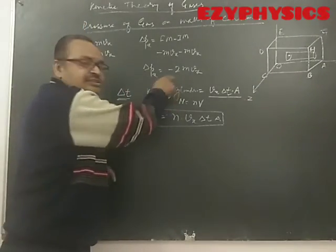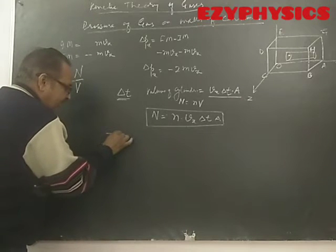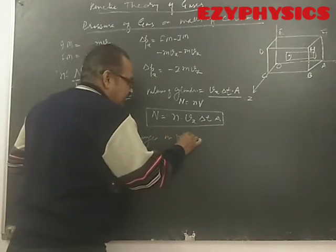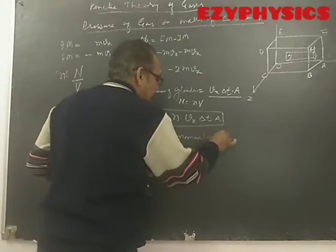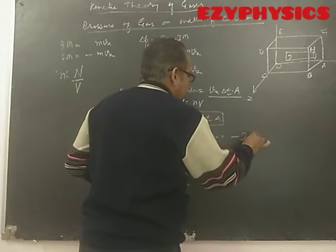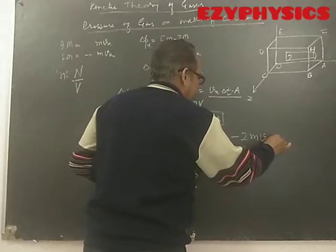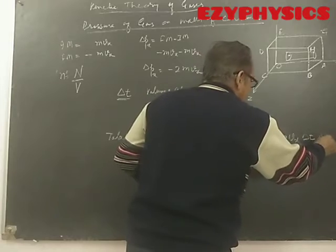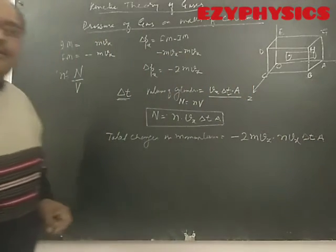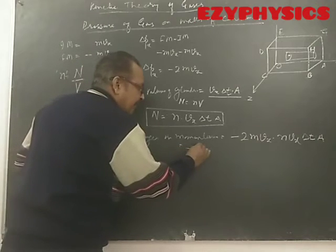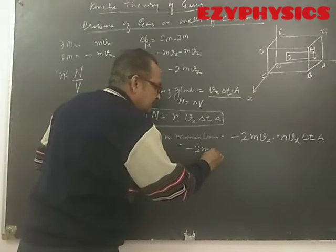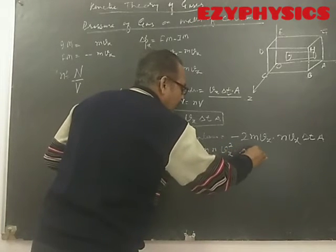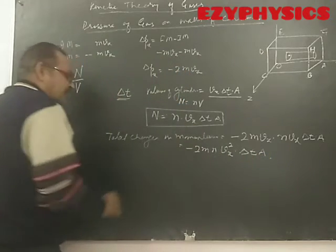So the total change in momentum will be equal to minus 2MVx multiplied by n·Vx·ΔT·A, which simplifies to minus 2MVx² · n · ΔT · A. This is the total change in momentum.